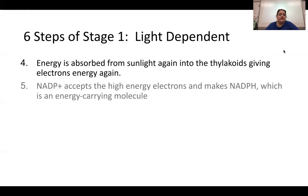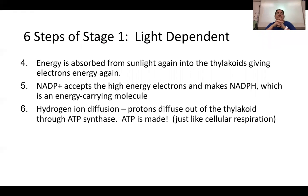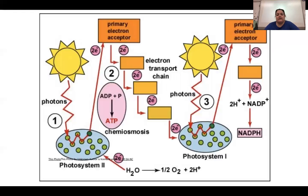The same electrons from the water — now re-energized by sunlight — are accepted by NADP+, which is already present in the chloroplast, converting it into NADPH, an energy-carrying molecule. Step six: the hydrogen ions (protons) diffuse through the thylakoid membrane through ATP synthase, producing more ATP. So in stage one, we make both ATP and NADPH.